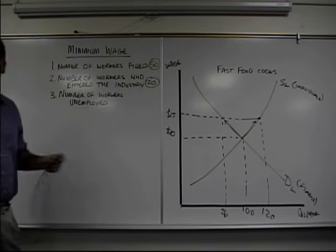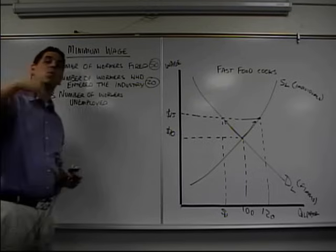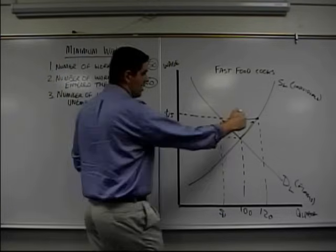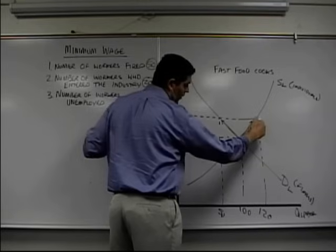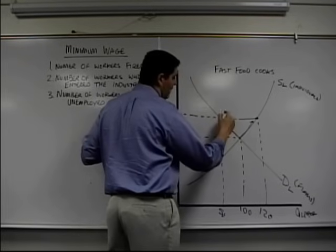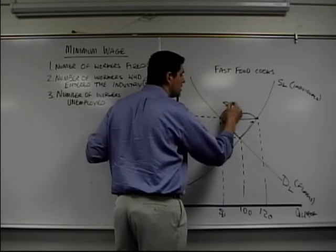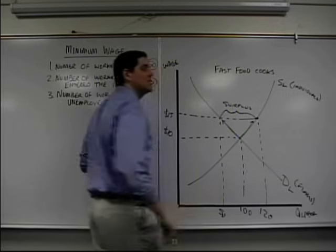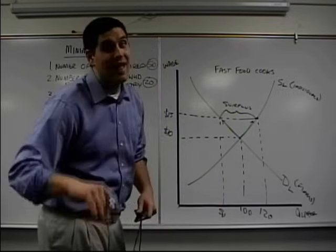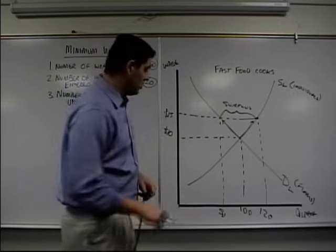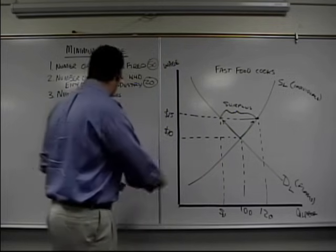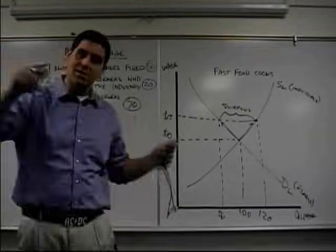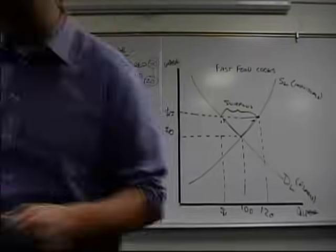How about the number of people unemployed? The people who wanted a job but can't get a job — they're right there between 120 and 50. This is a surplus, but it's not a surplus of product; it's a surplus of workers. That's unemployment. In this situation, it's 70 people unemployed. That's it — come back next time. Thank you.